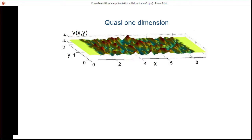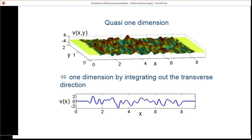In a quasi-one-dimensional setting, we can integrate out the transverse direction, and we are left with a potential which only depends on one variable, in this case x. This potential can be described by a correlation length L, which basically defines the roughness of that potential.